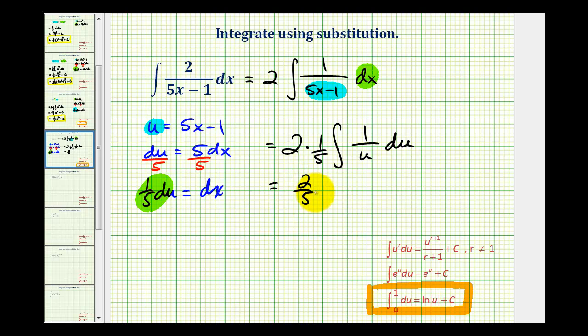So we'd have 2 5ths times the antiderivative of 1 over u with respect to u, which is natural log absolute value of u plus c.